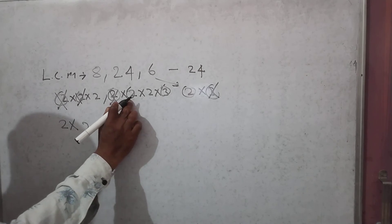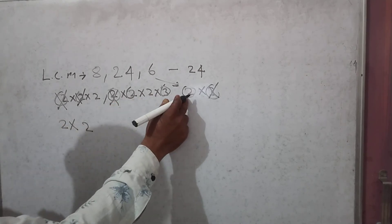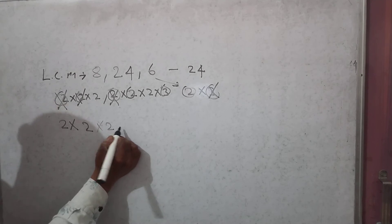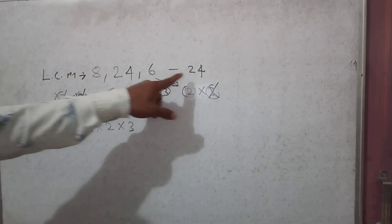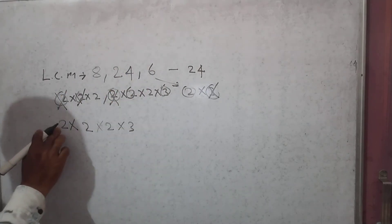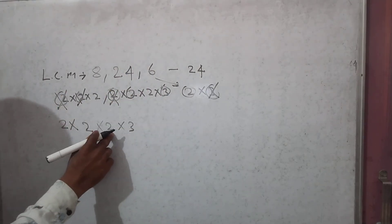2, 2, 2, and 3. Our LCM is 24 of this number. So 2 into 2 is 4, 4 into 2 is 8, 8 into 3 is 24. So LCM of this number is 24.